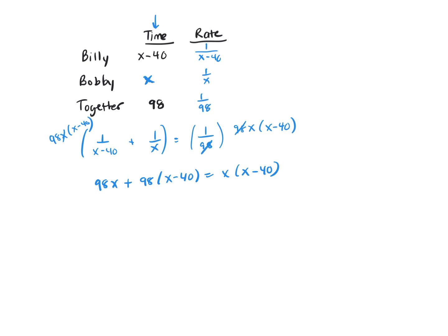And we want to solve this equation for X. So this is 98X plus, distribute the 98, that's 98X minus 98 times 40, which is 3,920.